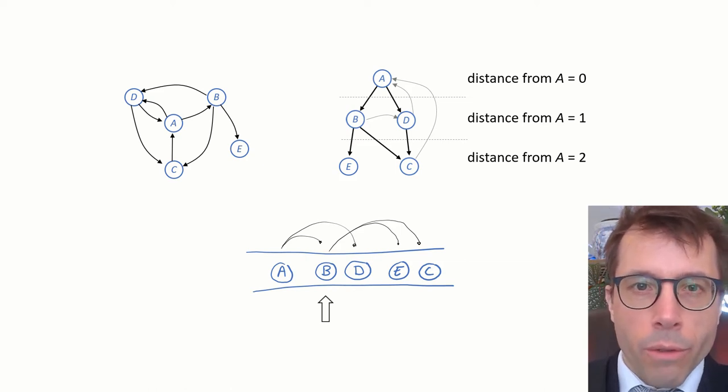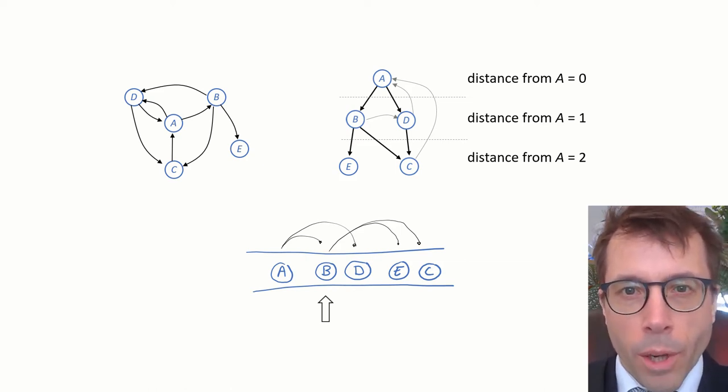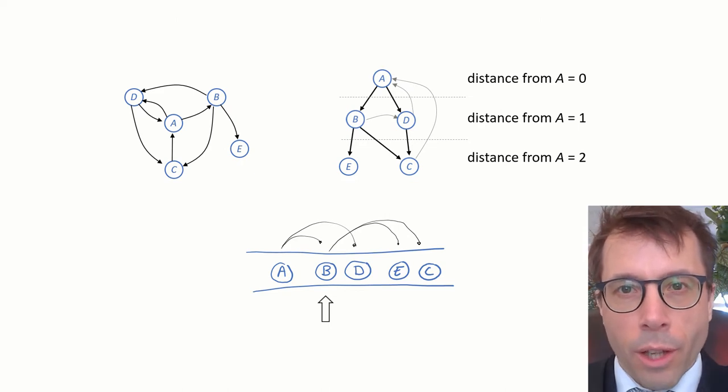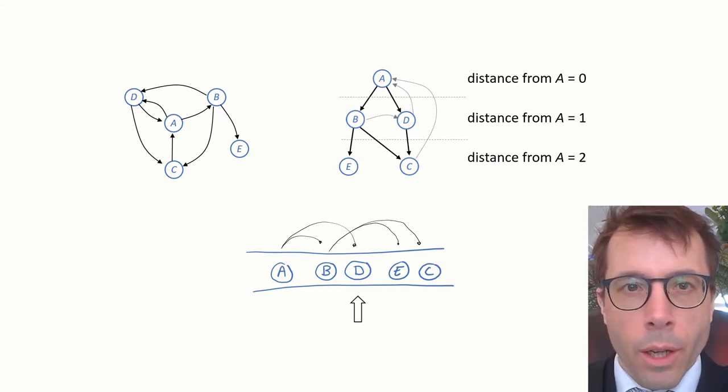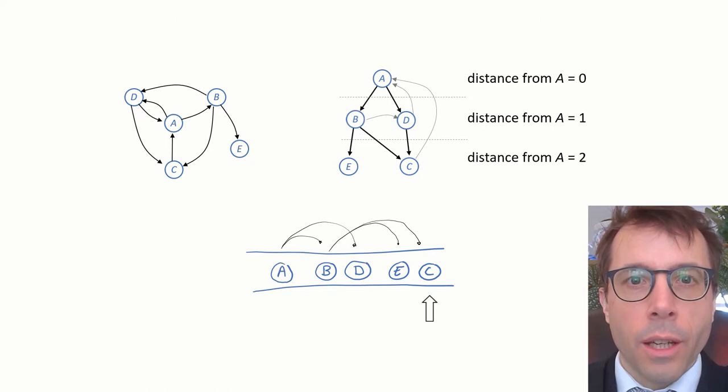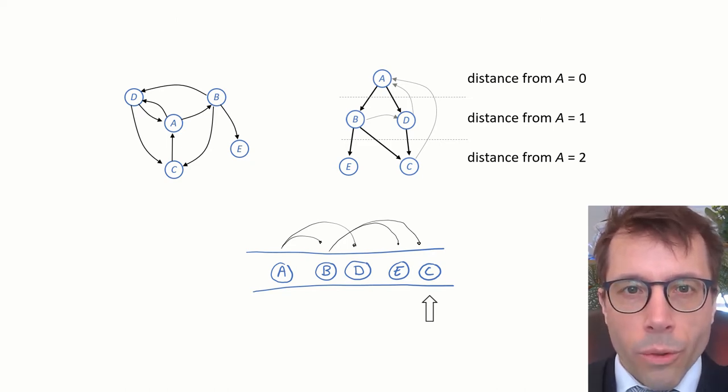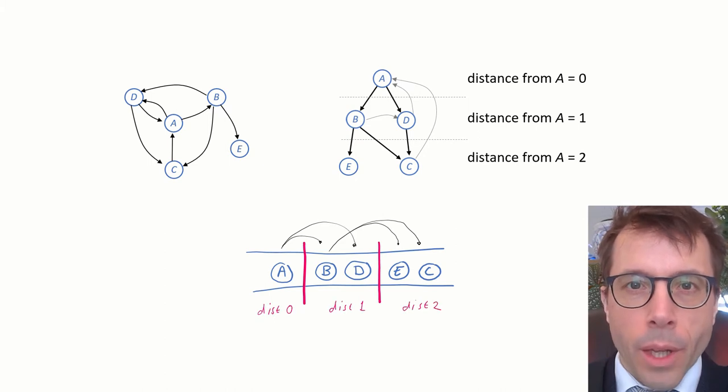We can keep track of which vertices we've come across before by storing a boolean value at each vertex indicating have I seen this vertex already. Next, move our attention on to D. It has two neighbors A and C, but we've seen them both already so we don't need to do anything, and likewise at E and at C.